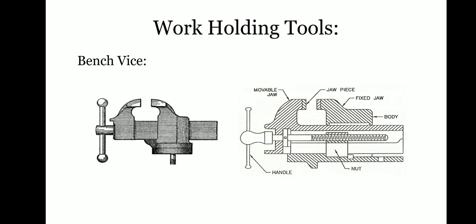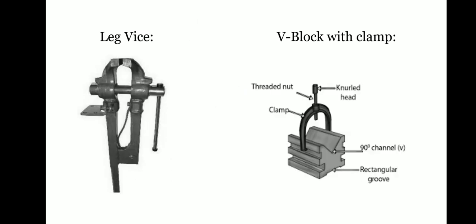The jaw faces of the vise are made from hardened steel and are serrated in a criss-cross pattern, which provides a firmer grip on the workpiece. The jaw faces are screwed to the sliding jaw and the fixed jaw so that if they are damaged, they can be replaced.